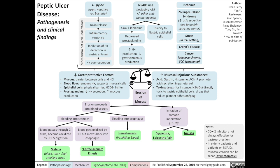The combination of reduced gastroprotective factors and increased injurious substances leads to erosion of the gastric mucosa. When erosion proceeds into blood vessels, that leads to bleeding into the stomach or esophagus. Bleeding into the stomach results in blood passing through the GI tract, becoming oxidized by hydrochloric acid and digested, eventually coming out as melena — black, tarry, foul-smelling stool. Once blood gets oxidized by hydrochloric acid but moves back into the esophagus and is vomited out, that results in coffee ground emesis.